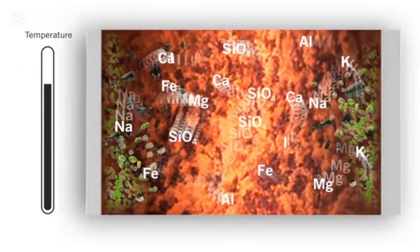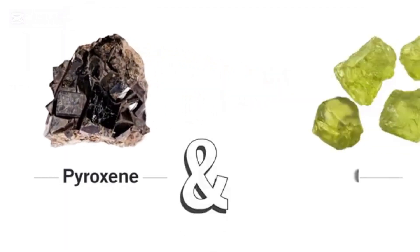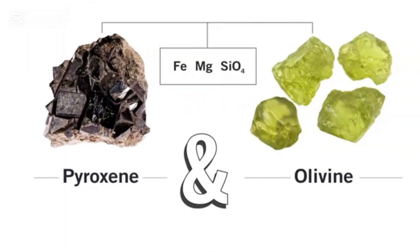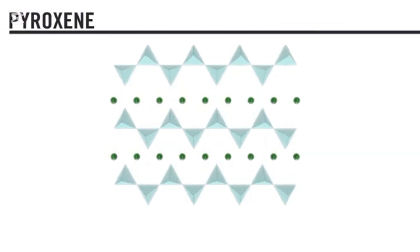As the temperature of the melt continues to decrease, a group of minerals named pyroxenes form. Pyroxenes and olivine contain similar elements, but the atomic arrangement of those elements is slightly different, which is why pyroxene minerals look very different from olivine crystals. The silica ions within pyroxenes link up into single chains, which means that each silica tetrahedron shares two oxygen atoms with neighboring tetrahedra.